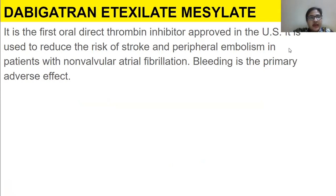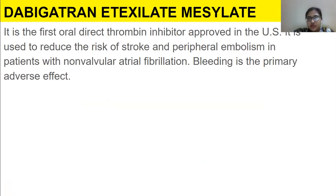Then we have dabigatran etexilate mesylate. It is the first oral direct thrombin inhibitor that was approved. It is used to reduce the risk of stroke and peripheral embolism in patients with non-valvular atrial fibrillation. Bleeding is the primary adverse effect of this drug.